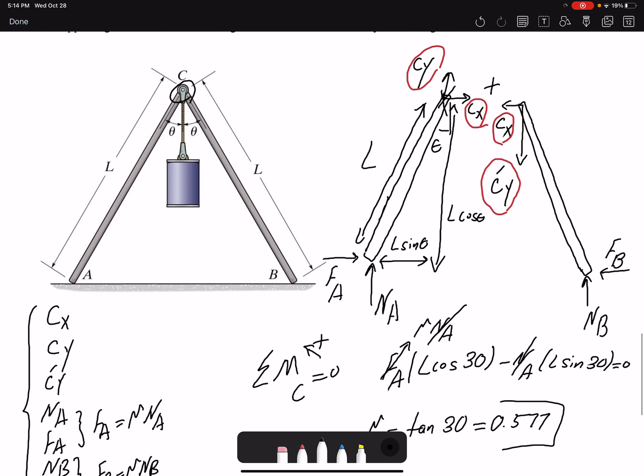But also we can use the other approach, which is to look at the problem and identify that member AC is a two-force member. Why? Because we have forces applied only at two locations.